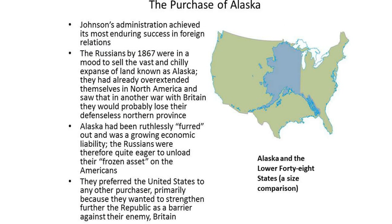Johnson's administration achieved its most enduring success in foreign relations. The Russians, by 1867, were in a mood to sell the expanse known as Alaska. They had already overextended themselves in North America and saw that in another war with Britain, they would probably lose their defenseless northern province. Alaska had been ruthlessly furred out and was a growing economic liability.